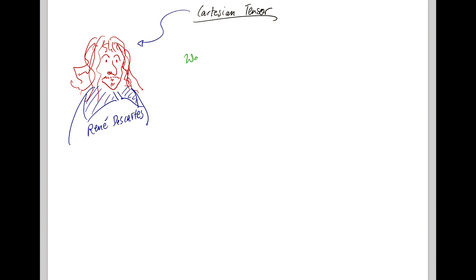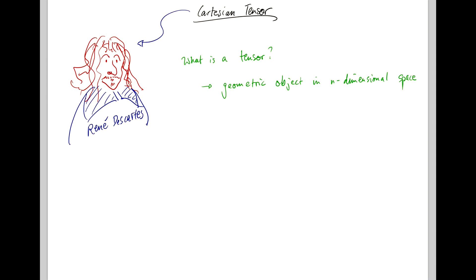What is a tensor? It's a fundamental geometric object in n-dimensional space, and what it describes is best illustrated by looking at specific examples.